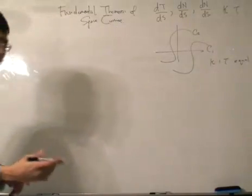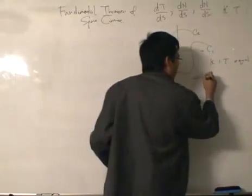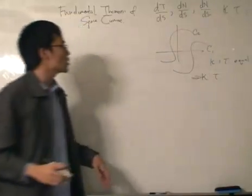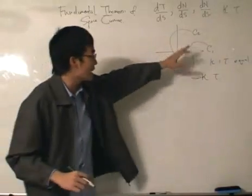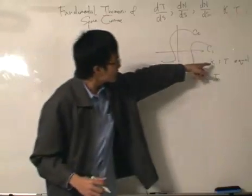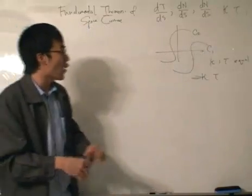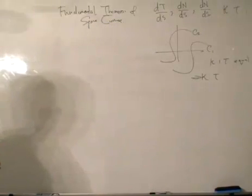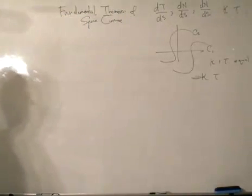That would imply that a curve could be described using the values of kappa and torsion. If two curves are congruent — not equal, because they could be located in different parts of space — if the values of kappa and torsion are equal, that would mean that kappa and torsion describe the curve. That is what we want to prove, and this is the Fundamental Theorem of Space Curves.